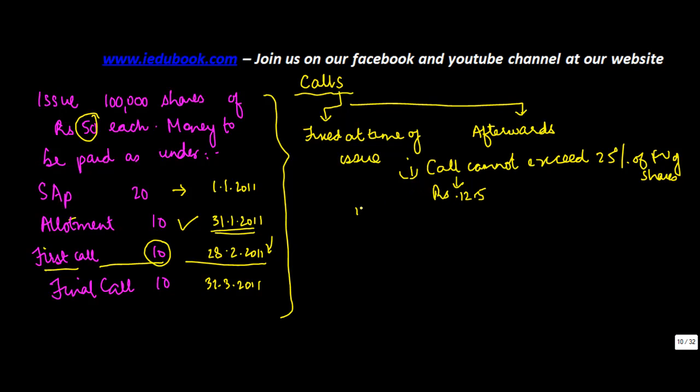And the second thing is, there should be an interval of at least one month. So let's say instead of 28th February, we make this 28th March, and this has 31st May.